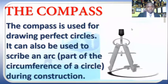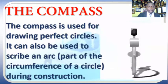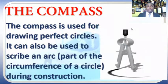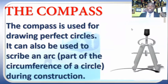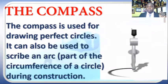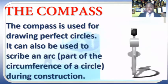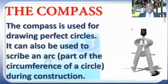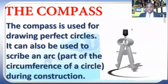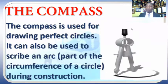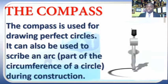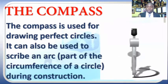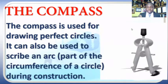Another very important instrument is the compass. As we can see on the slide, the compass is used for drawing perfect circles. It can also be used to scribe an arc when we intend to bisect or construct several other items, but basically it is used to construct or draw a perfect circle.